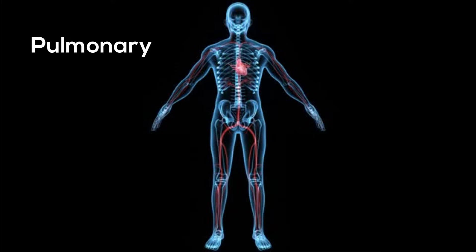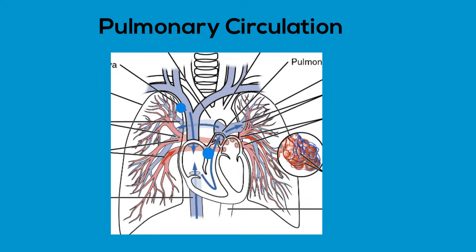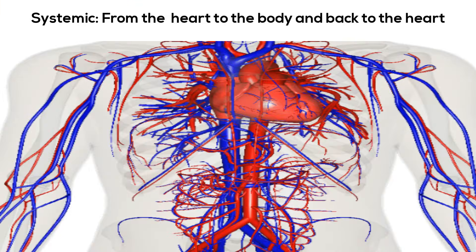The pulmonary circulation and the systemic circulation. Pulmonary circulation travels from the heart to the lungs where your blood picks up oxygen and then back to the heart. Systemic circulation is from the heart to the rest of the body.